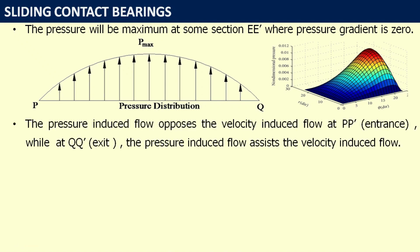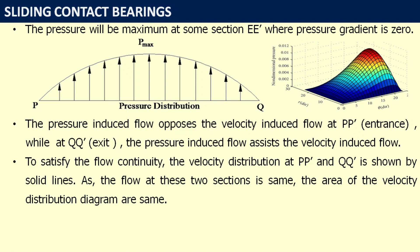The pressure-induced flow opposes the velocity-induced flow at entrance P-P'. Initially, pressure is developed due to the shaft's rotation, so the flow is velocity-driven, and the pressure-induced flow opposes it at the entrance. At the exit, positive pressure is developed and the shaft is also rotating, so the pressure-induced flow assists the velocity-induced flow. To satisfy flow continuity, the actual velocity distributions at entrance and exit — shown by solid lines — have equal areas. Thus, two convergent flat surfaces separated by a viscous fluid film can generate positive pressure and support an external load.